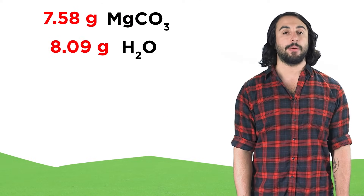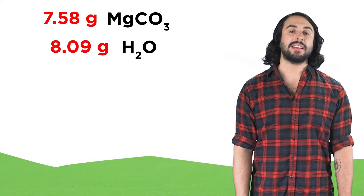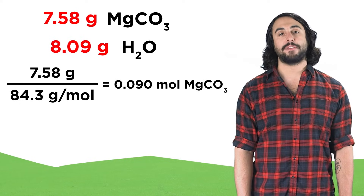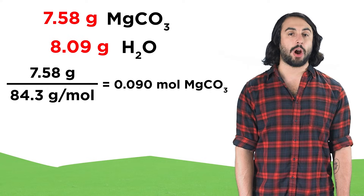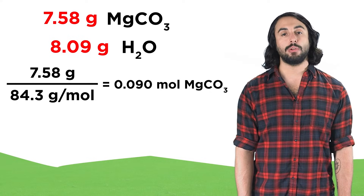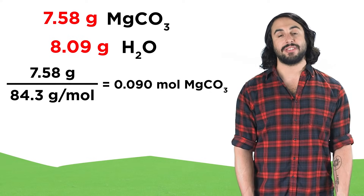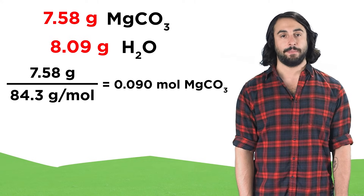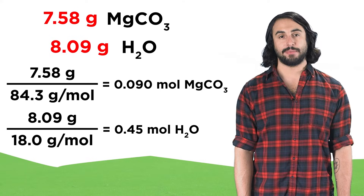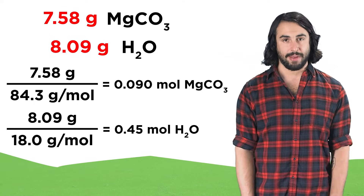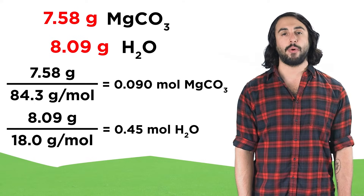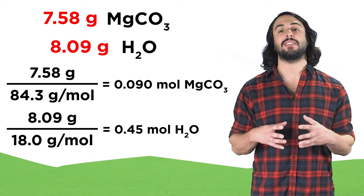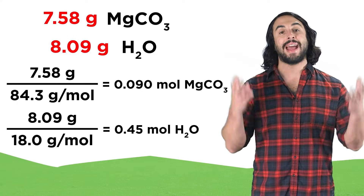Now that we have the mass of each component, let's convert these values into moles. 7.58 grams of magnesium carbonate divided by the molar mass will give us around 0.09 moles of the salt which still remains, and 8.09 grams of water divided by its molar mass will give us around 0.45 moles of water molecules, which used to be inside the salt but are now up in the air.